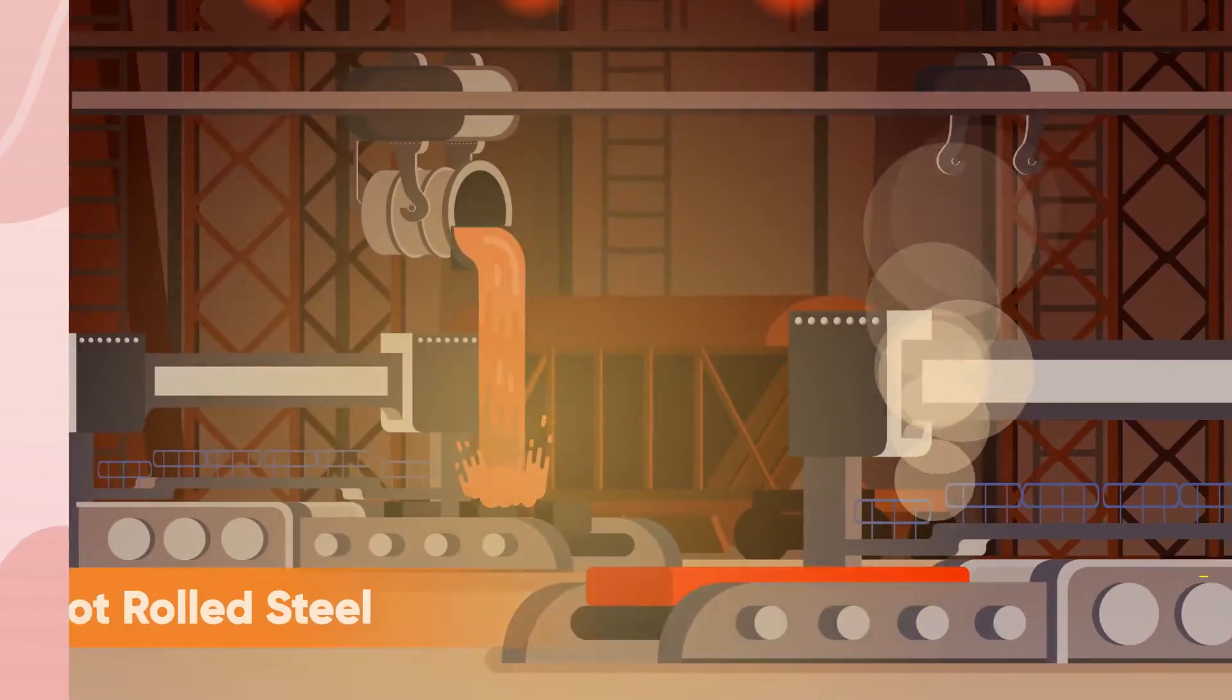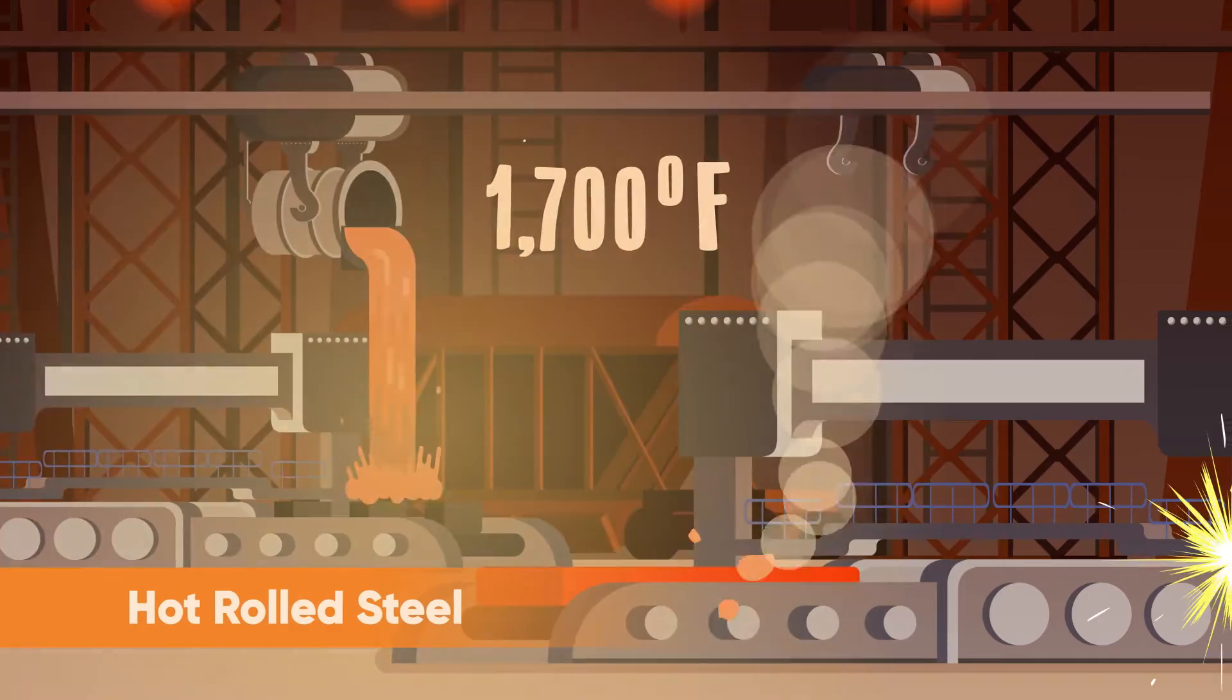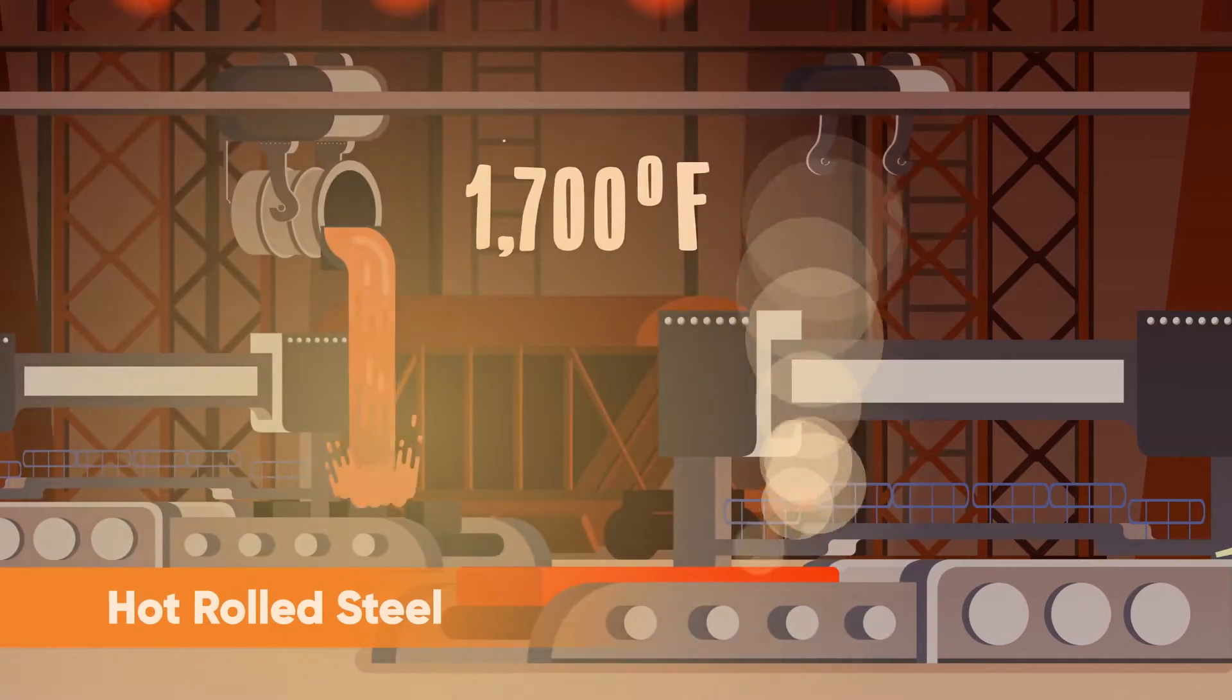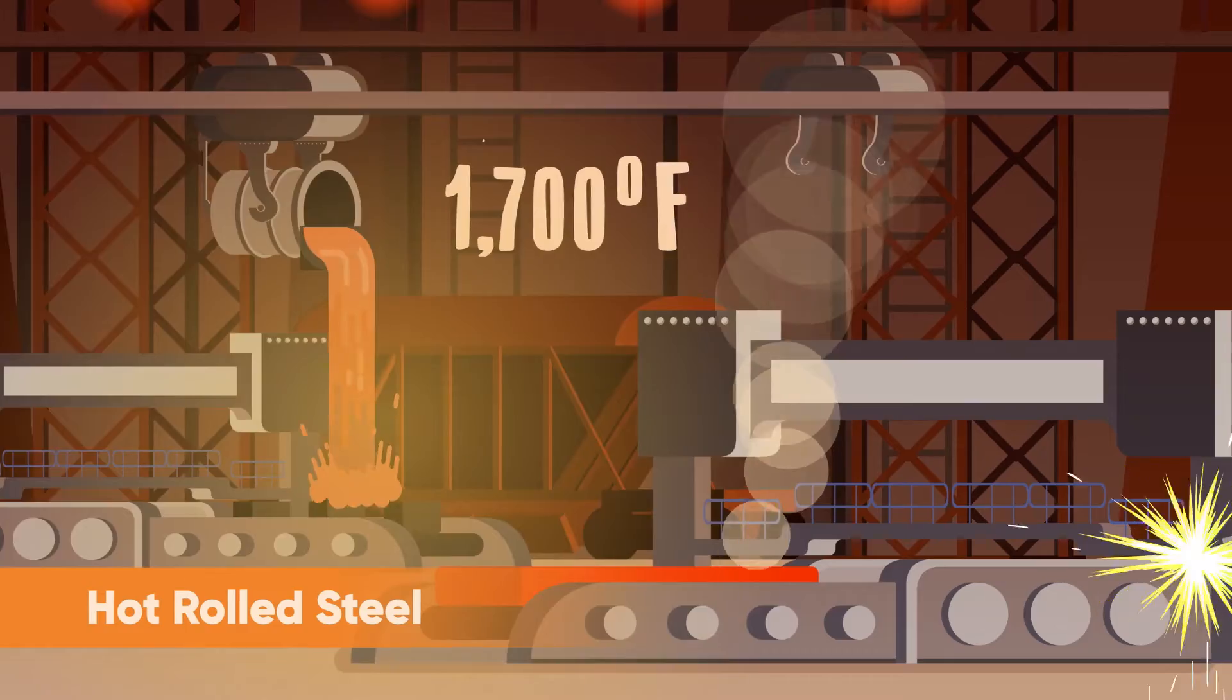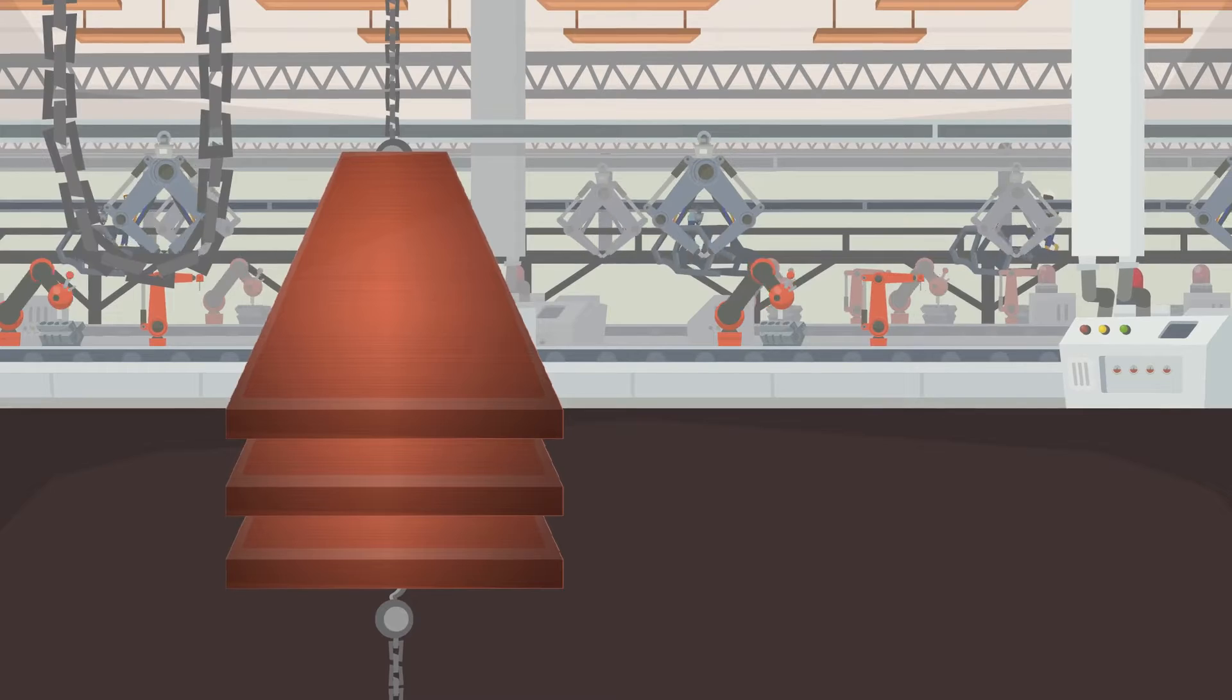Let's start with hot rolled steel. It's heated to over 1,700 degrees Fahrenheit. Pretty toasty. This makes the steel easier to shape, perfect for creating beams, bars, and sheets.